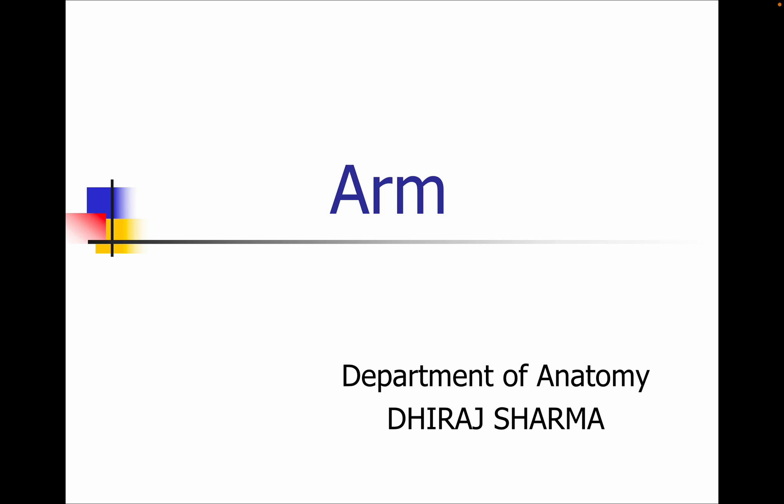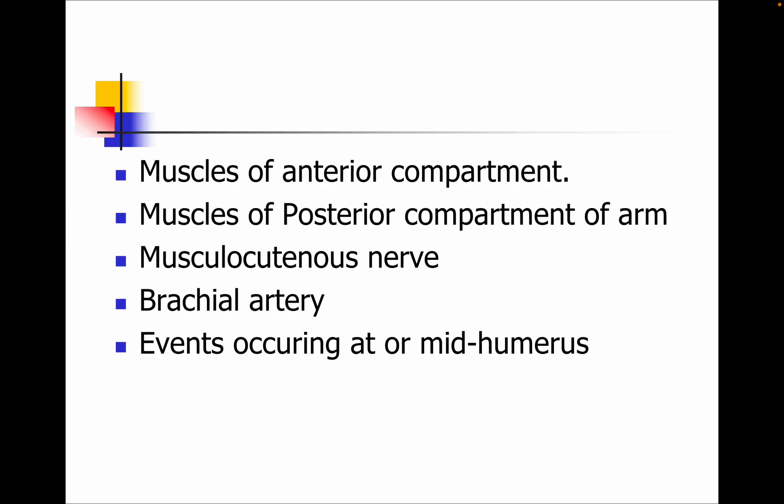According to today's lecture, the topic is regarding the arm region. We will see the anterior compartment and the posterior compartment. The objectives for today's class are: muscles of the anterior compartment of the arm and muscles of the posterior compartment of the arm. We also have the musculocutaneous nerve.